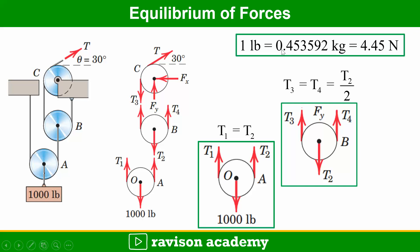So one pound is 0.453592 kilograms, which is 4.45 newtons.